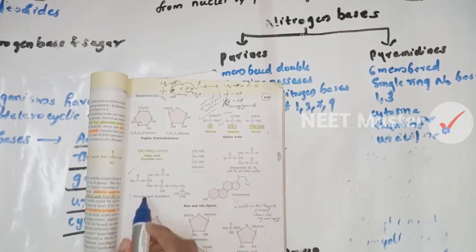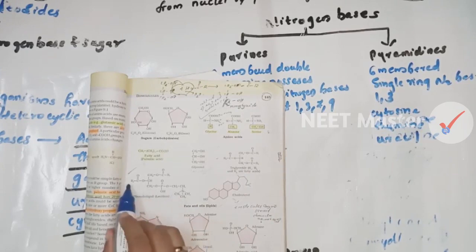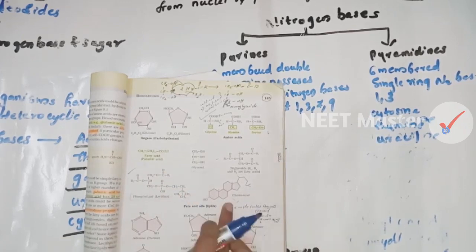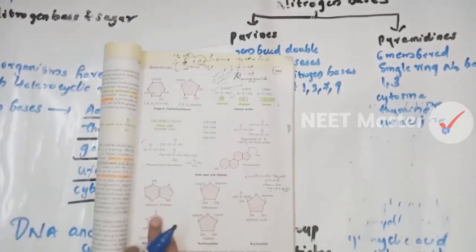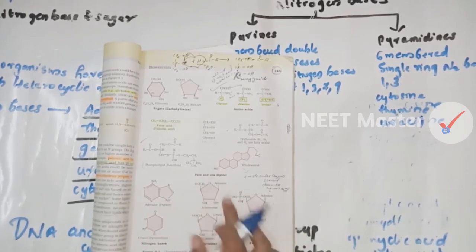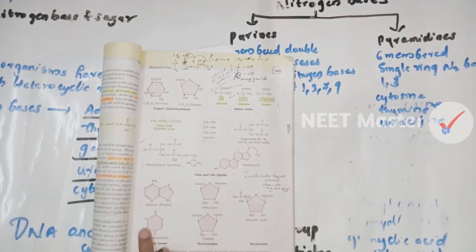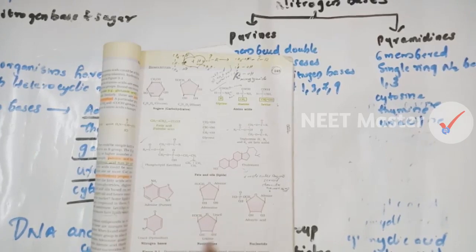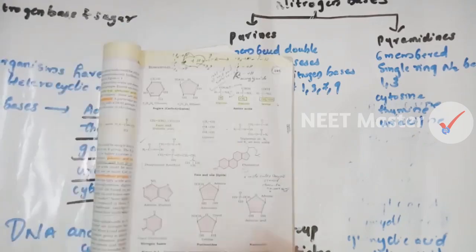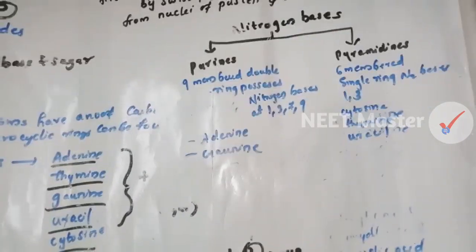Triglycerides and phospholipids — phospholipids are a type of fat. Some lipids form the cell membrane structurally. Adenine is a nitrogen base associated with sugar. It also has a phosphate group. Uracil is a pyrimidine. Adding sugar to uracil gives uridine. Thank you.